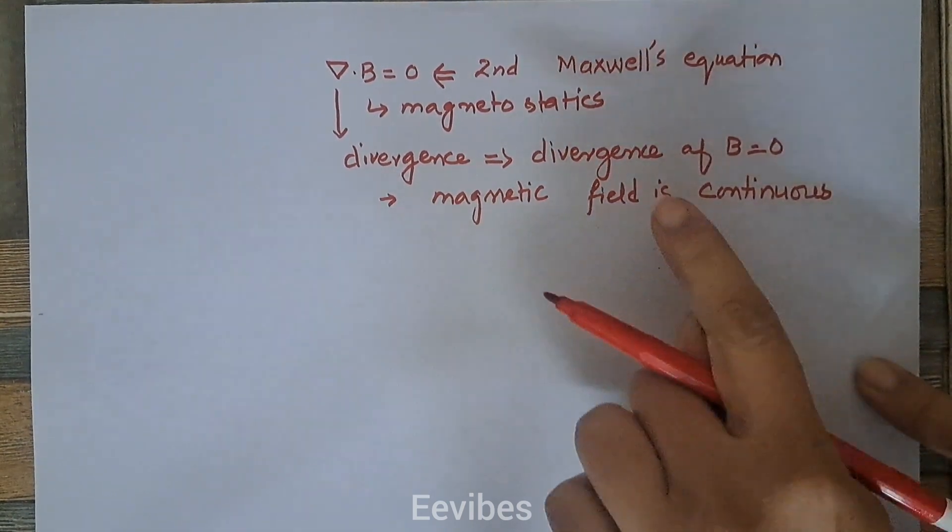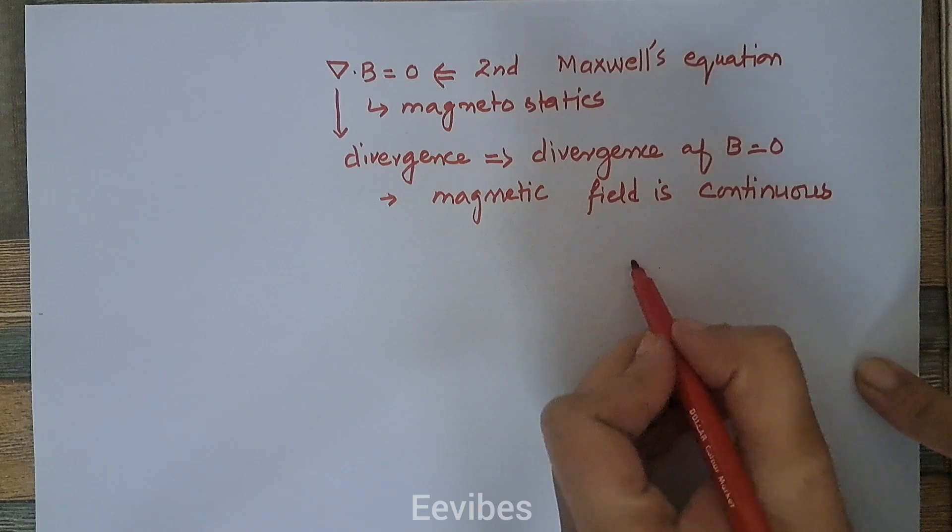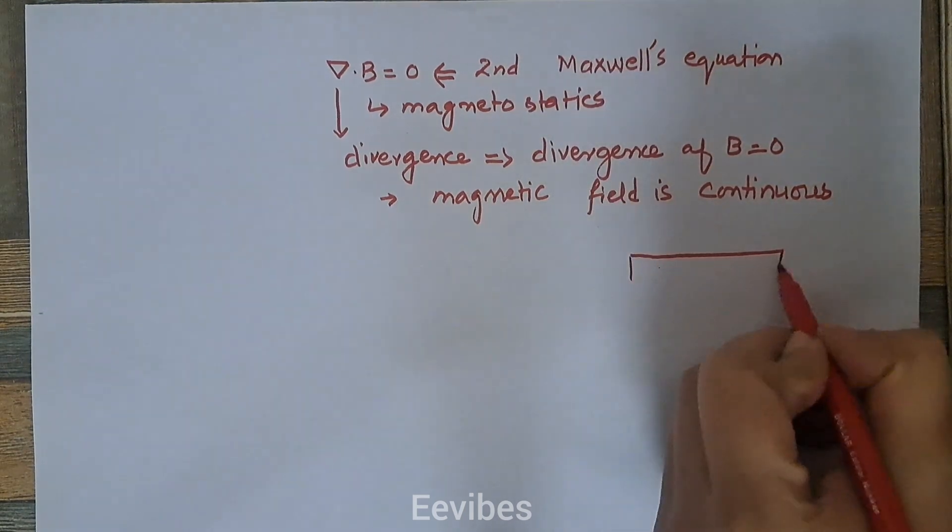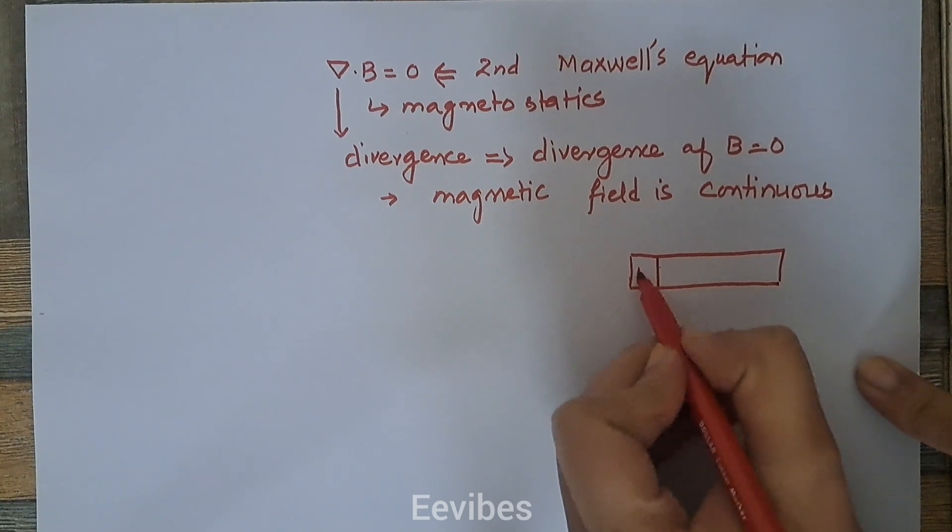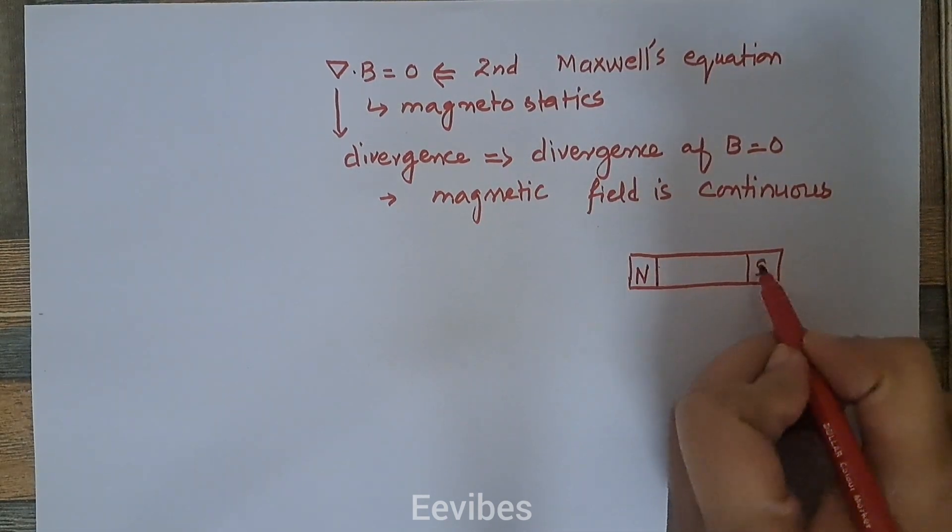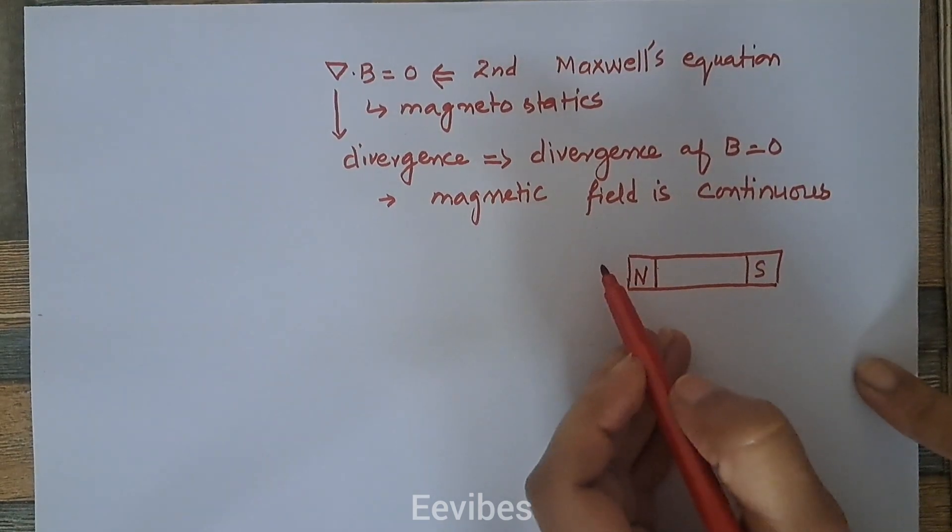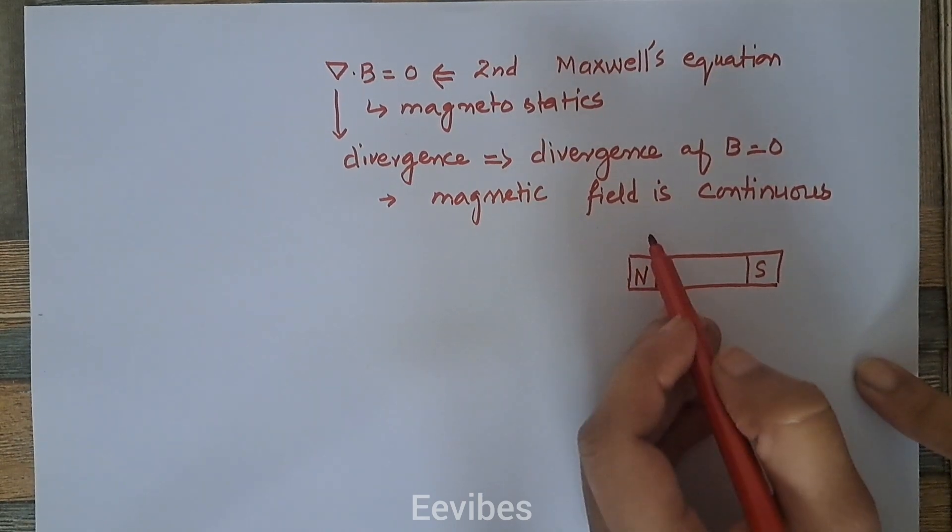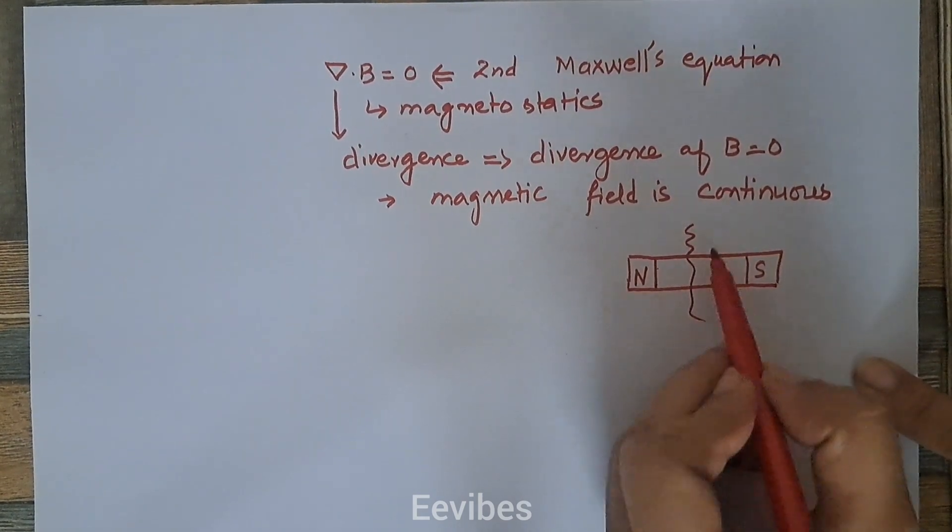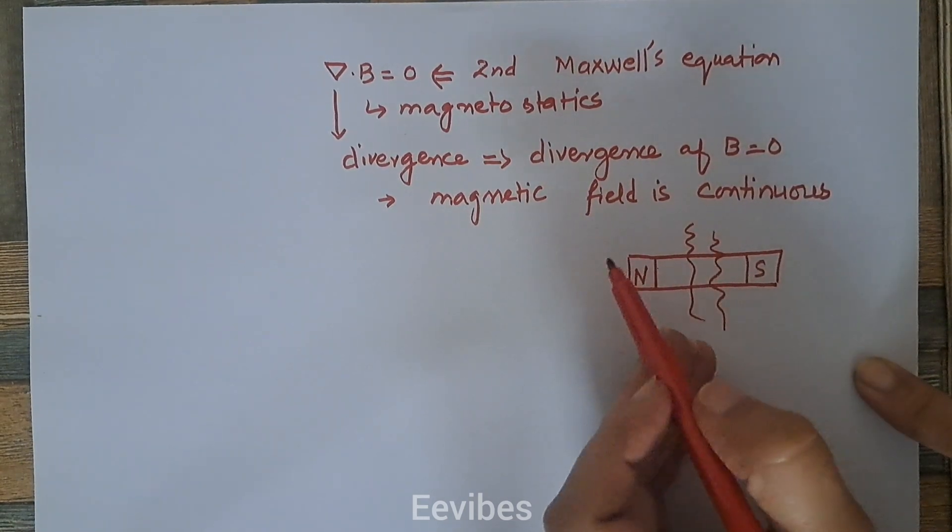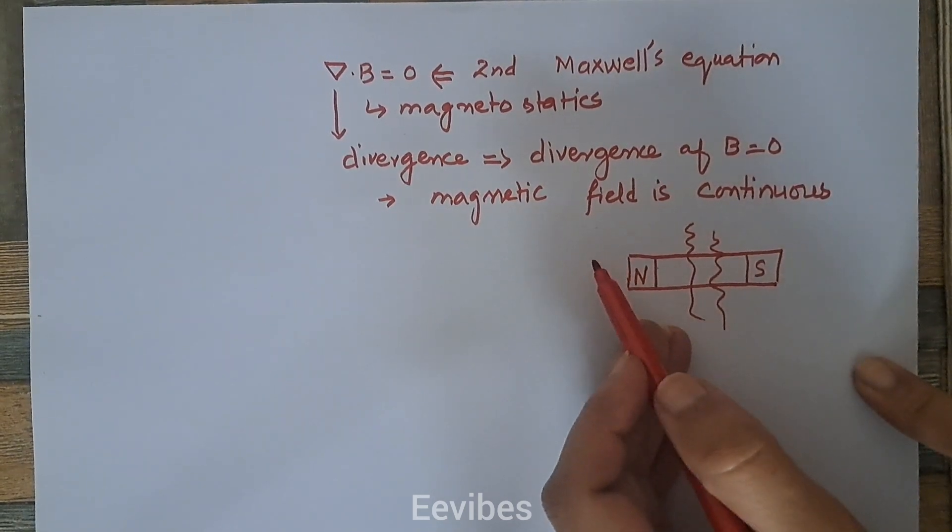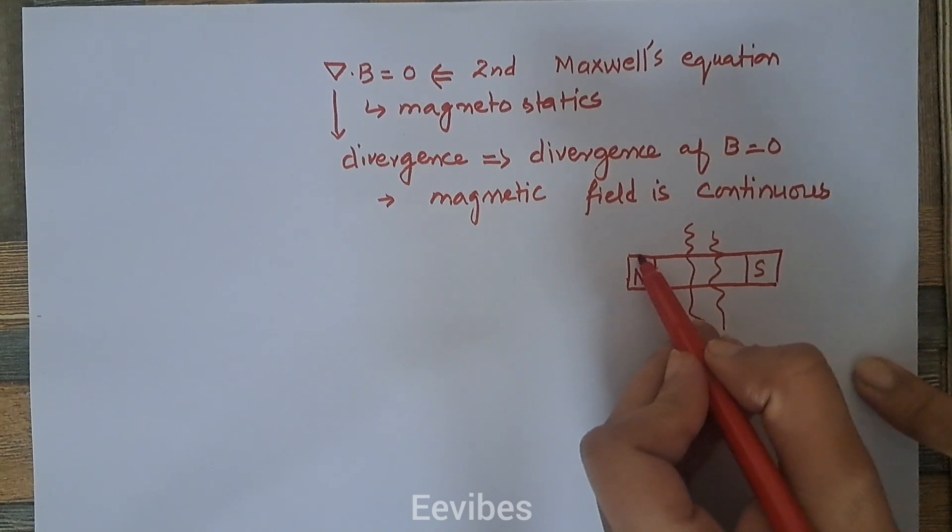When we state that something is continuous, then in terms of the magnet we can represent it as: if here is a north pole and a south pole, then the north and south poles of a magnet can never be separated. Therefore, the number of lines of magnetic flux leaving the north pole is exactly equal to the number of lines of magnetic flux entering the south pole.